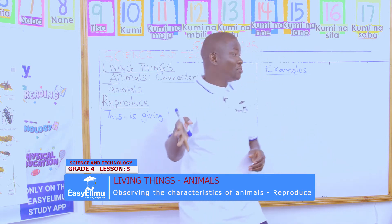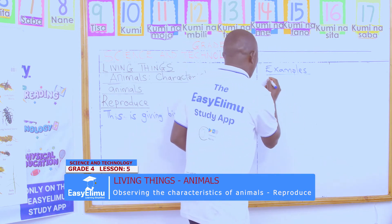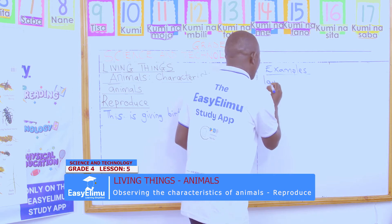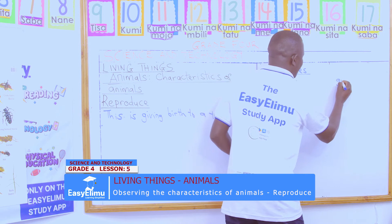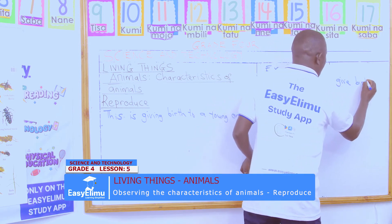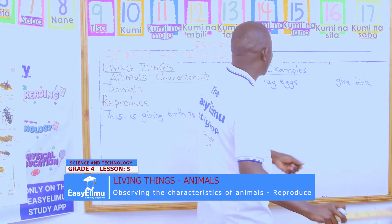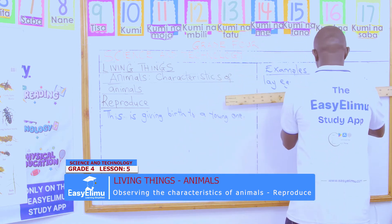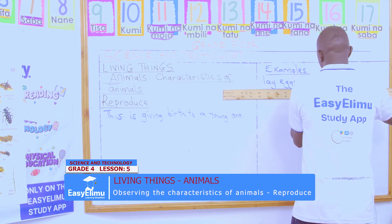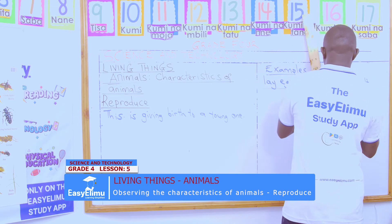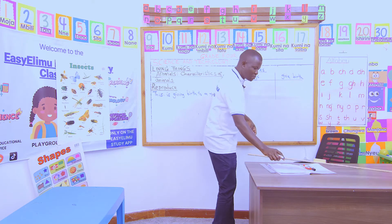So in our groups, let us give examples of animals which lay eggs and other animals which give birth. There are some animals which lay eggs and other animals give birth to young ones. Give two to three examples in your groups.